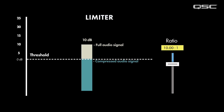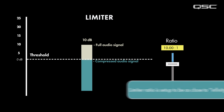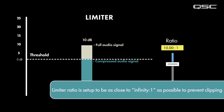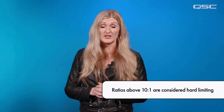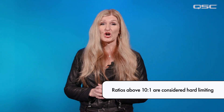The primary difference between a compressor and limiter is the ratio used in reducing gain. In a limiter, this ratio is set up to be as close to infinity to 1 as possible, meaning no matter how much the input signal changes, the output level will remain pretty much the same. Ratios above 10 to 1 are considered hard limiting.